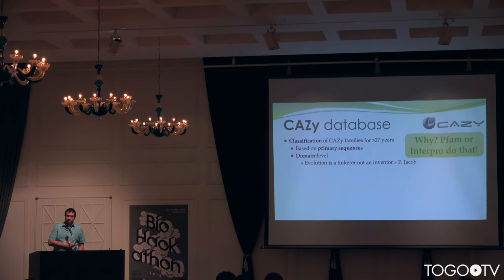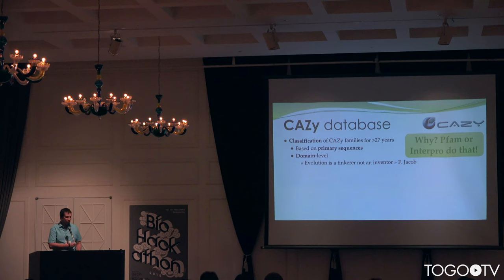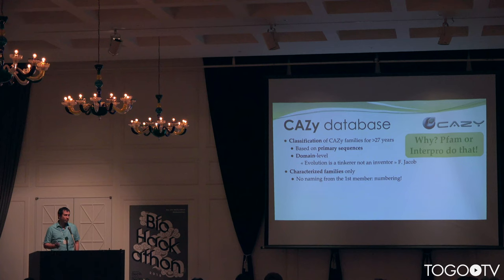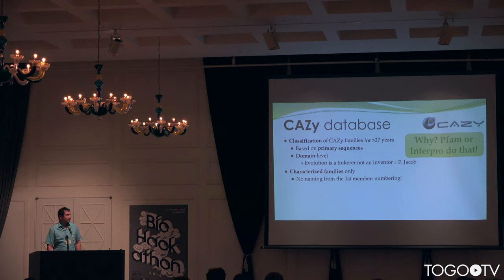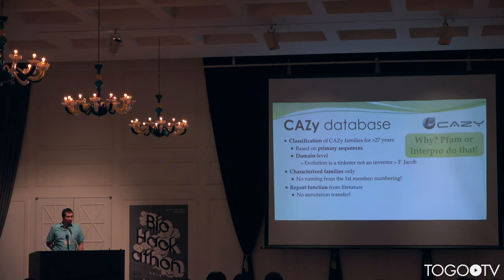It looks like PFAM, right? It's sort of a domain classification. So why do this when PFAM and Interpro are doing it? First, because we are interested only in characterized families — no domain of unknown function, only things that have been proved to act on carbohydrates. Also, we wanted to make sure that there is no ambiguous annotation by naming a family from the first characterized member, where we know there is a lot of diversity in each family. So we are numbering all families. It was also important for us to report the function of everything we find in the literature and maintain very important surveillance of the literature.